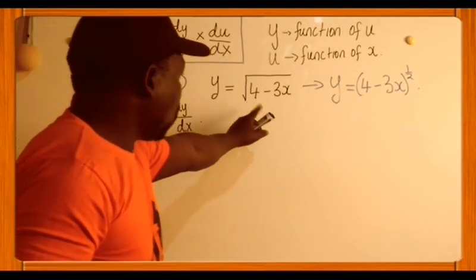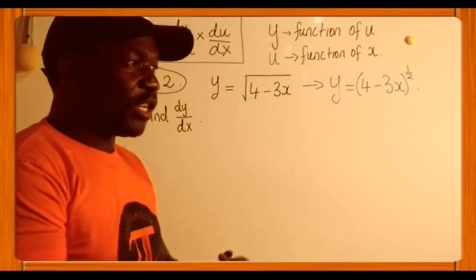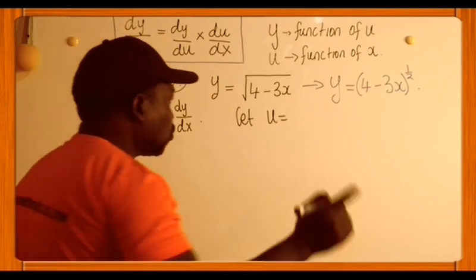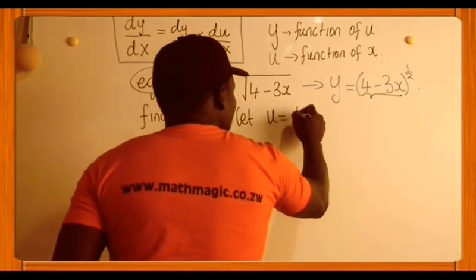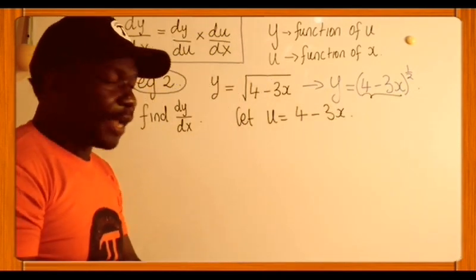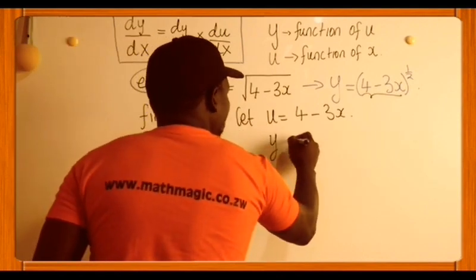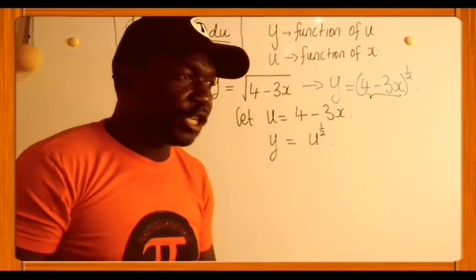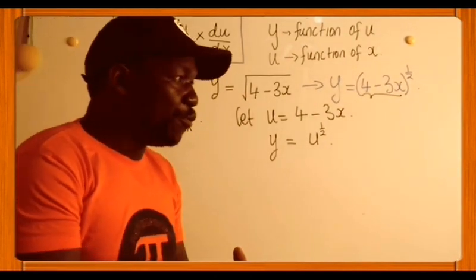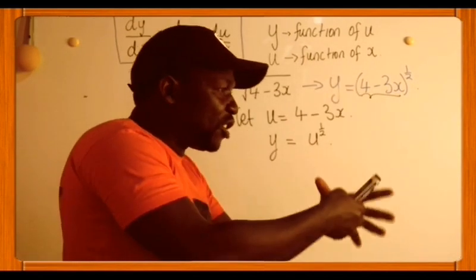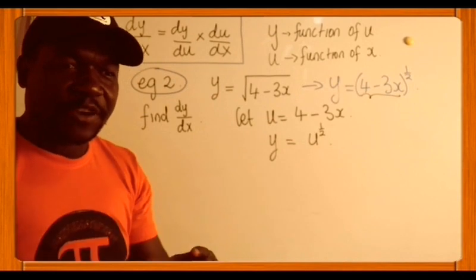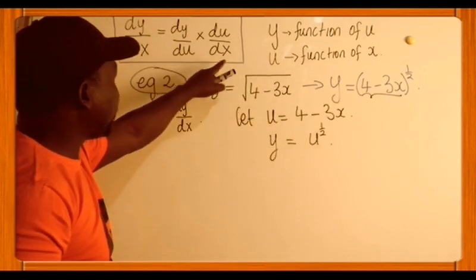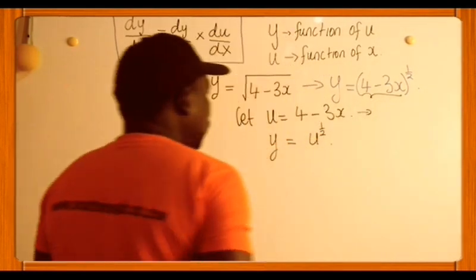So with our new expression, we need to make our substitutions: what is u, what is y. u is a function of x — it is the function inside. What is inside? 4 minus 3x. So u equals 4 minus 3x. If that is u, then y is u to the power of half. These are the first important substitutions: u is the function inside, u is a function in x, and y is a function in u.